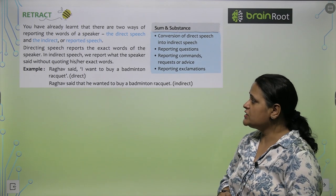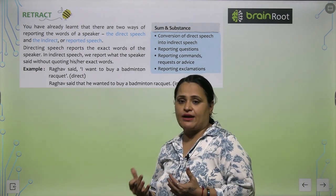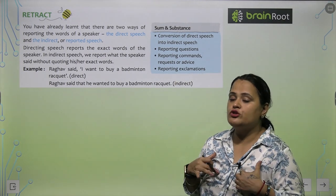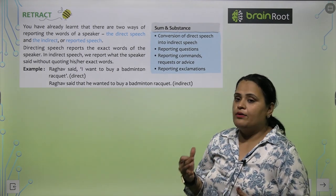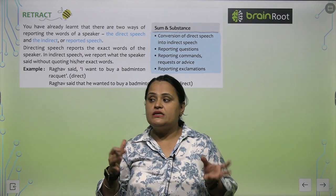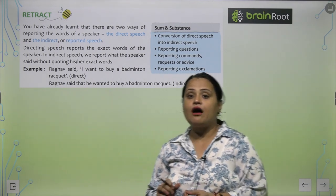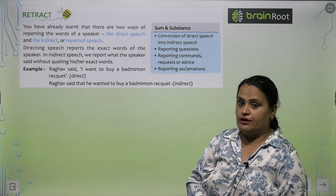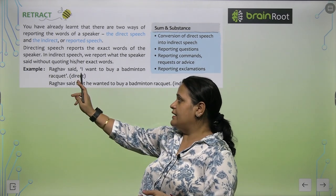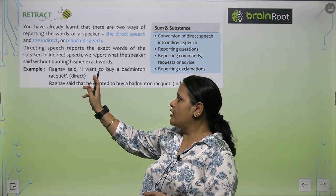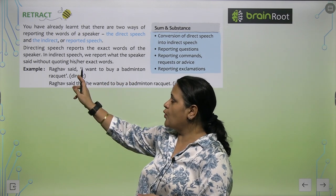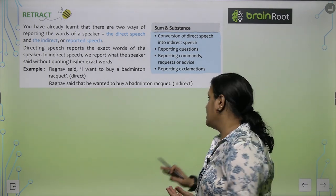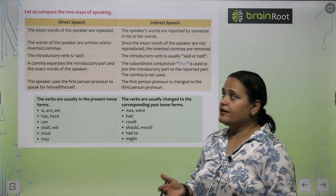Here is an example. Rahul said, 'I want to buy a badminton racket.' This is direct speech because Rahul himself says those words. But if we report Rahul's words indirectly, we say: Rahul said that he wanted to buy a badminton racket. Here the quotations are removed. I'll make this more clear ahead.